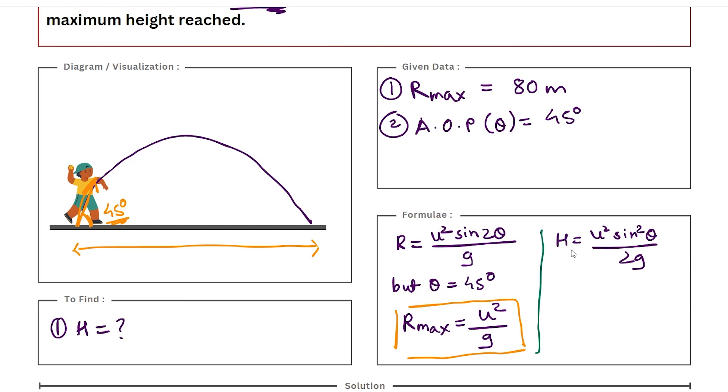But as I said, in this case we know the value of theta. So if we substitute theta as 45 degrees in this formula, we do get an updated formula. This formula comes out to be u²/4g.